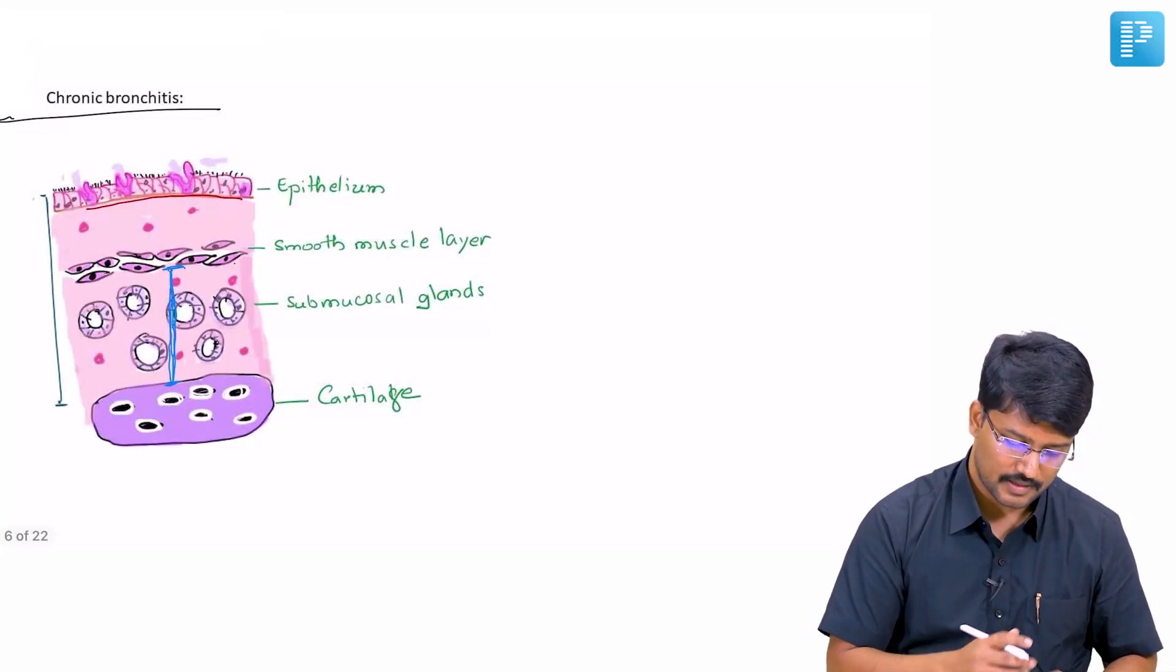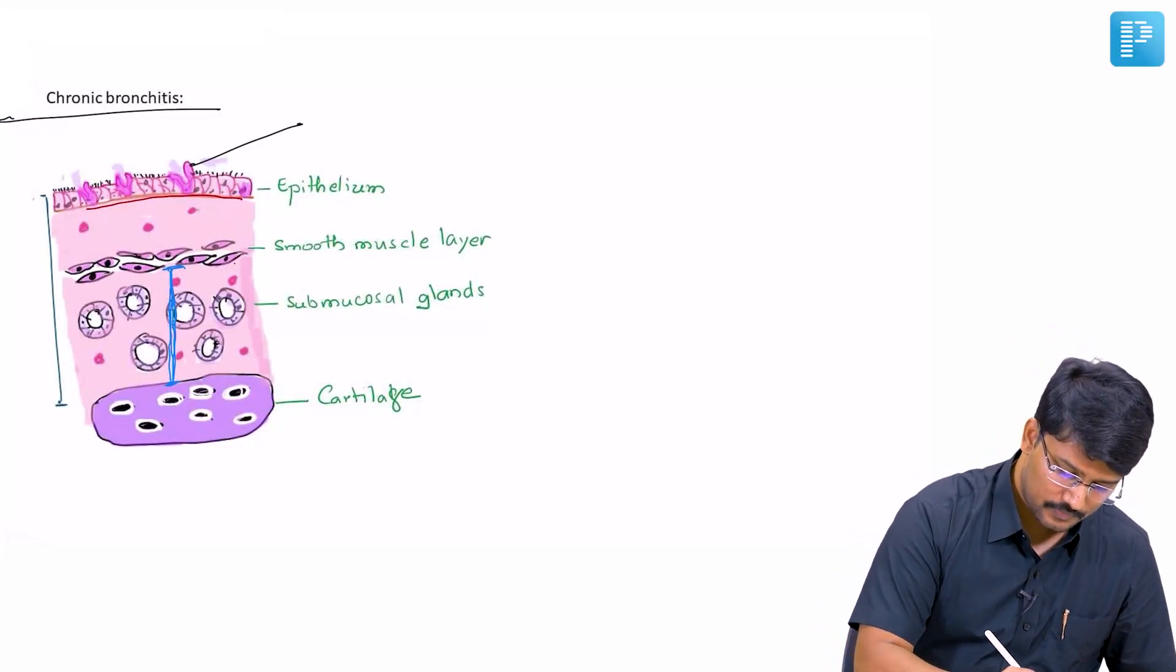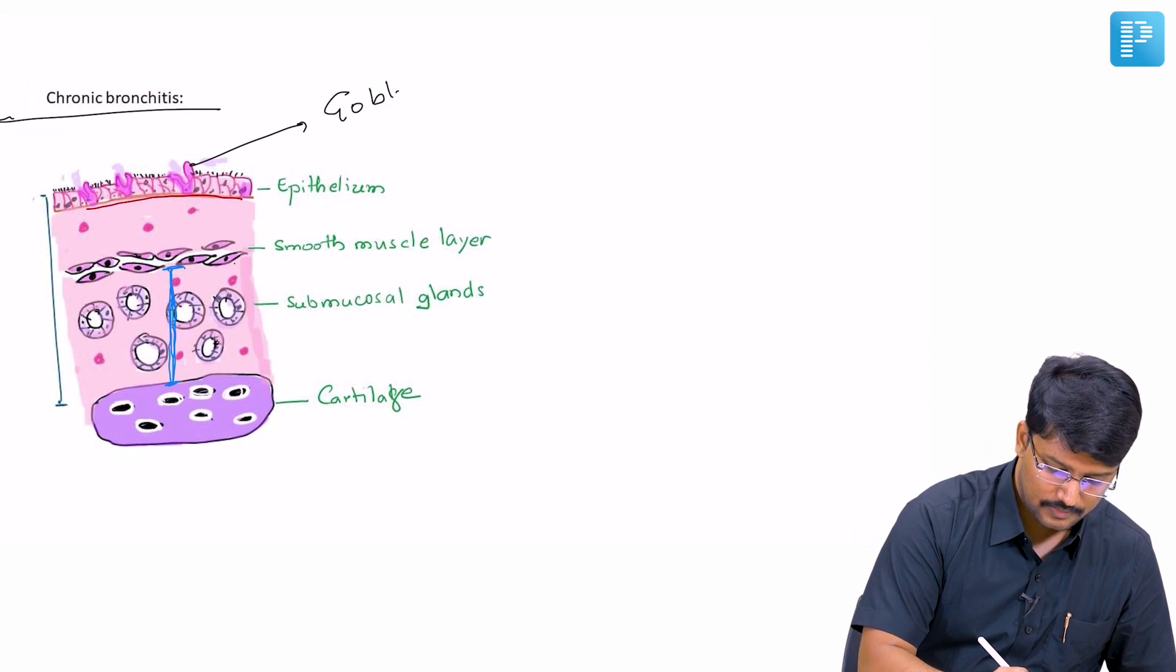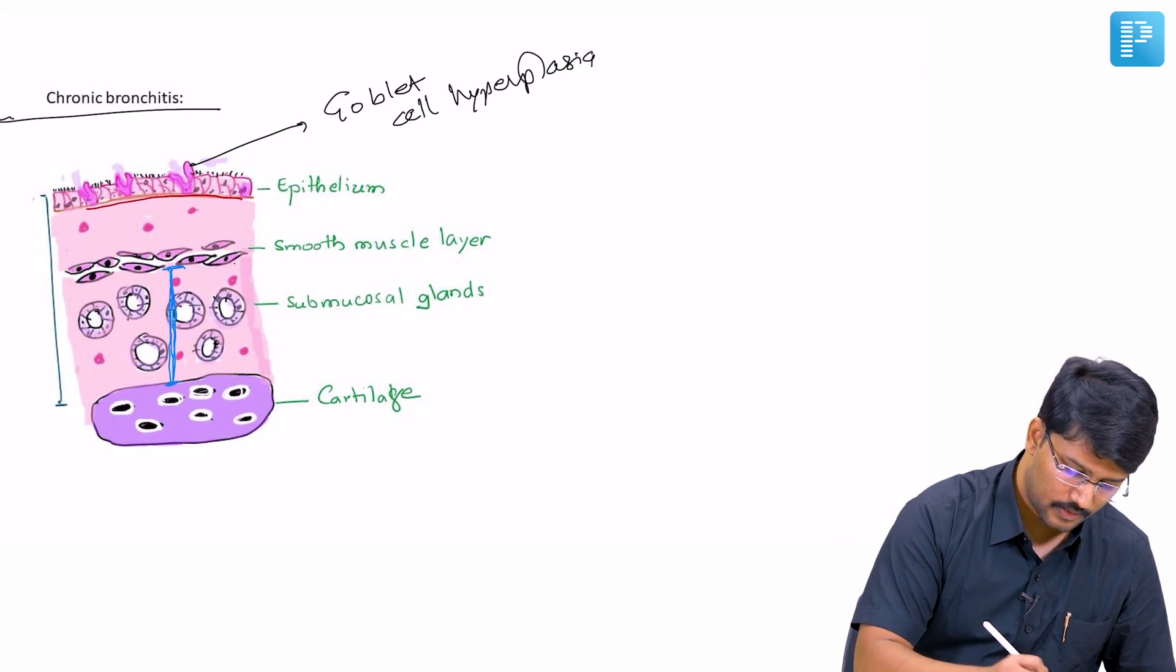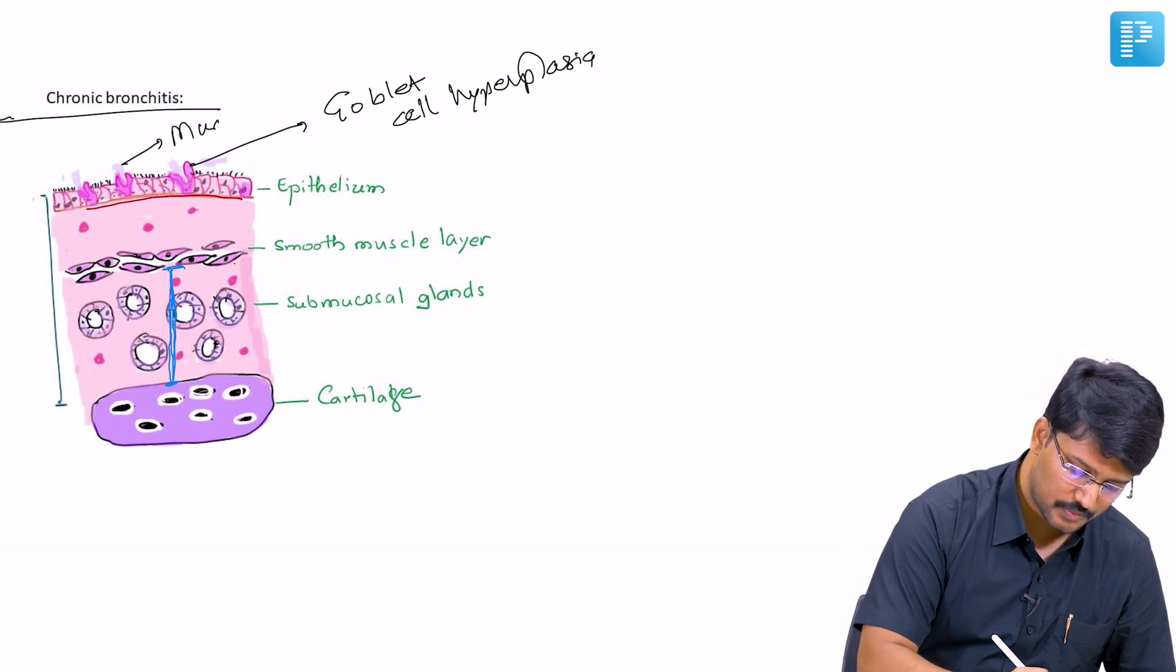If you examine the histopathological slide, you will notice that there is goblet cell hyperplasia. There is increased mucus production.